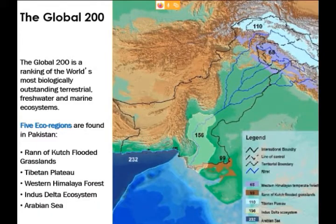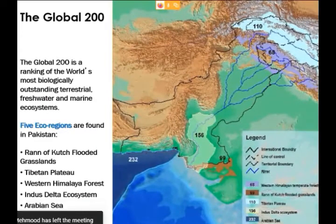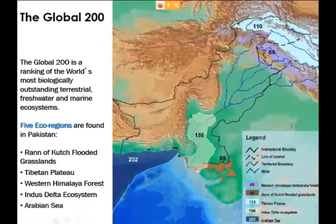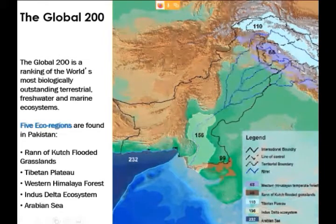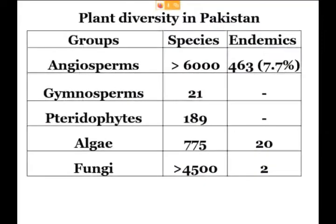According to the global ranking of the world's most biologically important terrestrial, freshwater, and marine ecosystems, out of 200 such systems, Pakistan has five ecoregions. These include the Indus Delta, the western Himalayas region, and other locations including extreme upland areas and the Arabian Sea region.